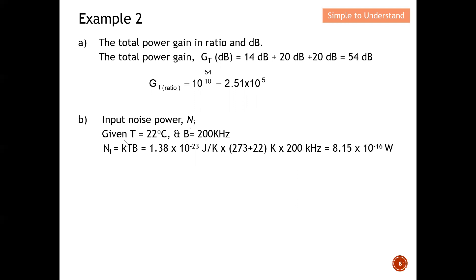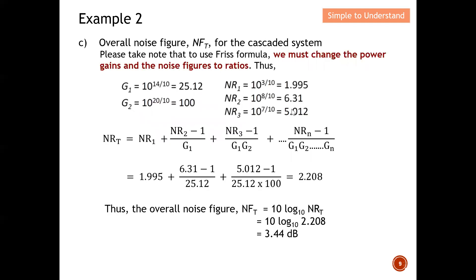Next the question asks for the input noise power. The input noise power is governed by the equation P = kTB, where k is Boltzmann's constant. The temperature given is 22 degrees Celsius; remember this needs to be in Kelvin, so we add 273 to get the temperature in Kelvin. The bandwidth is 200 kHz as given. From here I can compute the input noise power as 8.15 × 10⁻¹⁶ watts.